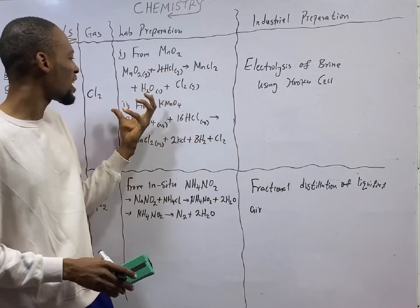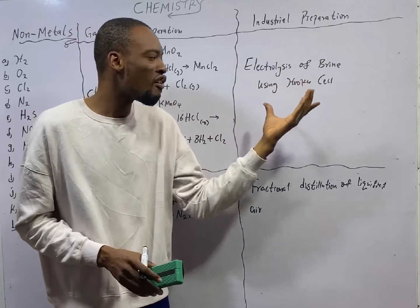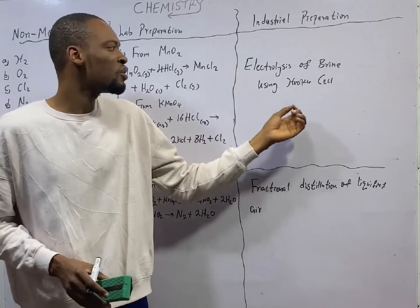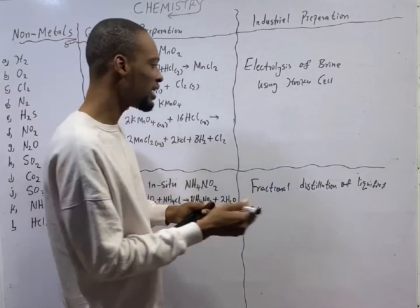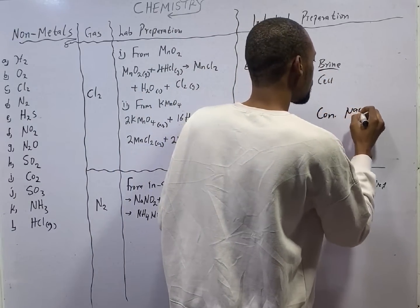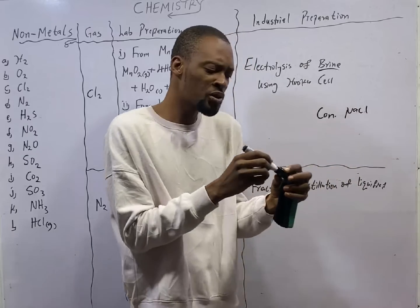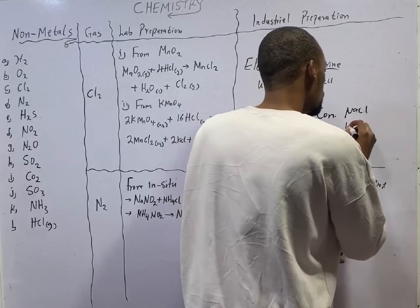And in the industry, we prepare chlorine gas using the electrolysis of brine, electrolysis of brine using the Hooker cell. Remember brine is concentrated sodium chloride, and concentrated sodium chloride means we have some more sodium chloride and a little water.